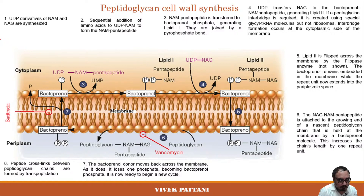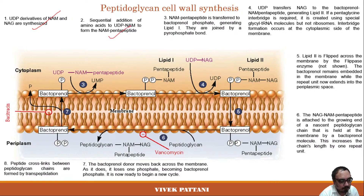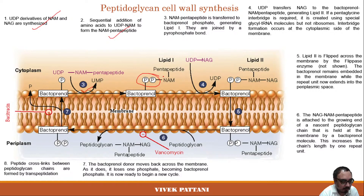Going forward with peptidoglycan cell wall synthesis: in the first part, UDP derivatives UDP-NAM and UDP-NAG are made. In the second step, five amino acids are added forming the NAM pentapeptide. In the third step, the NAM pentapeptide is transferred to bactoprenol phosphate, generating Lipid I, and they are joined by a pyrophosphate bond.